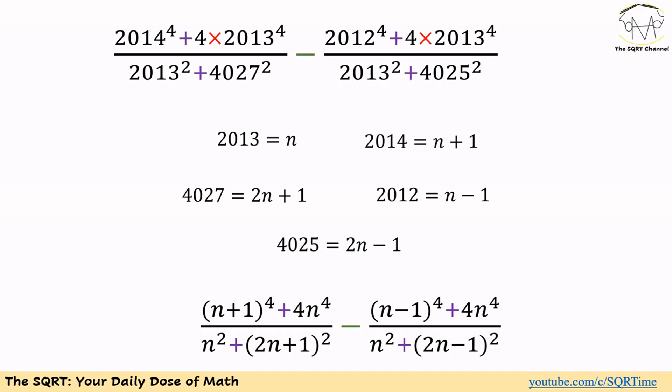2012 is going to be N minus 1, and we can write 4027 as 2N plus 1, and for 4025 we can use 2N minus 1. Now let's use the variables instead of those numbers. The first term becomes (N+1)⁴ plus 4N⁴ over N² plus (2N+1)², minus (N−1)⁴ plus 4N⁴ over N² plus (2N−1)².